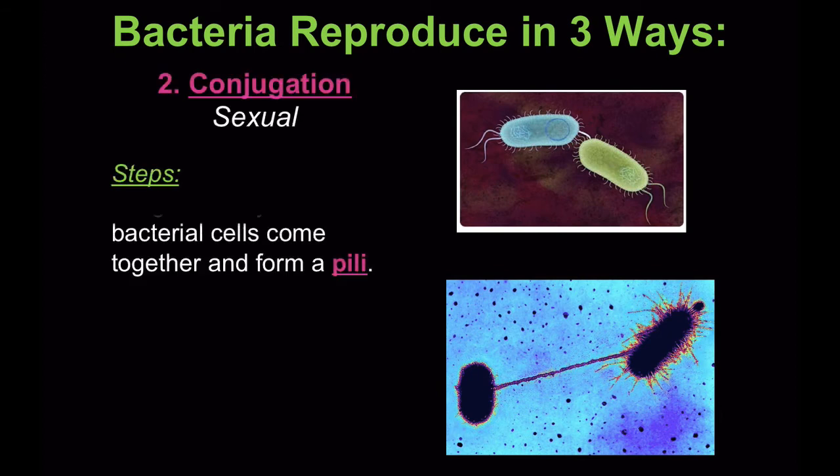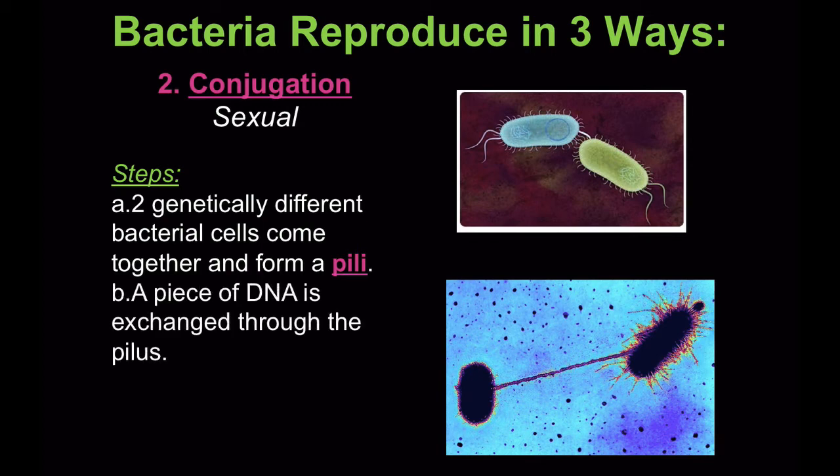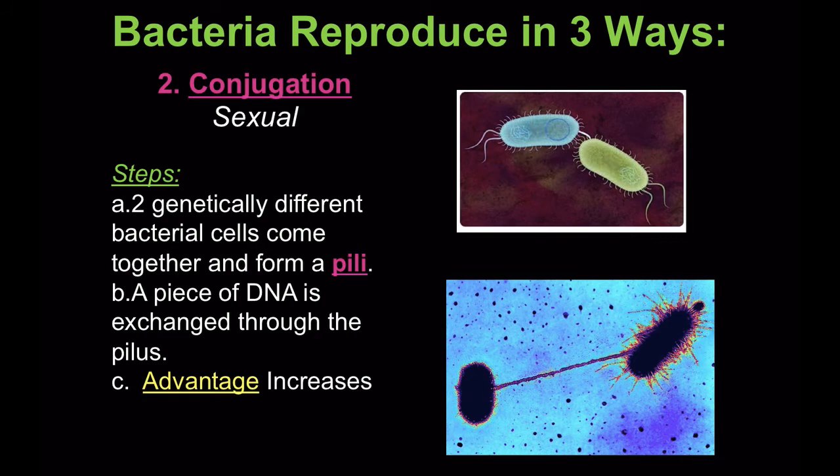Conjugation occurs when two genetically different bacterial cells come together to form a pilus. A piece of DNA is exchanged through the pilus, and the advantage is it increases genetic variability. We can also see that bacteria will actually exchange a resistance to an antibiotic through this process.